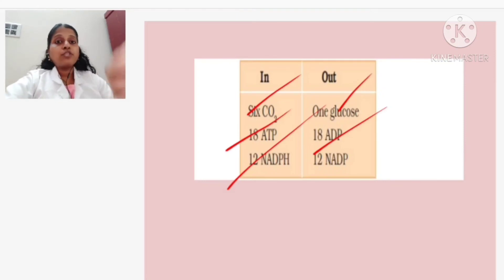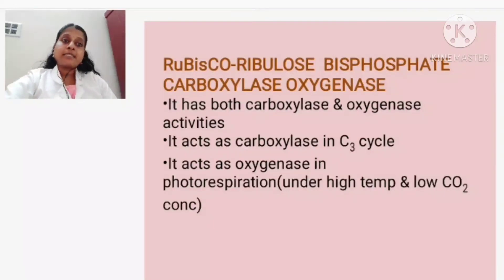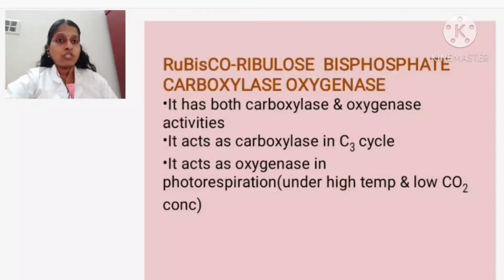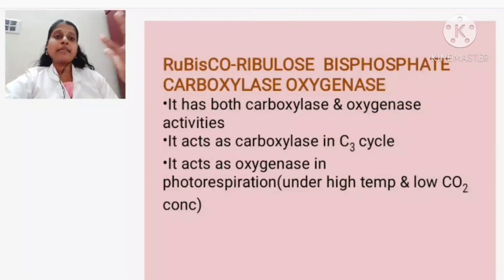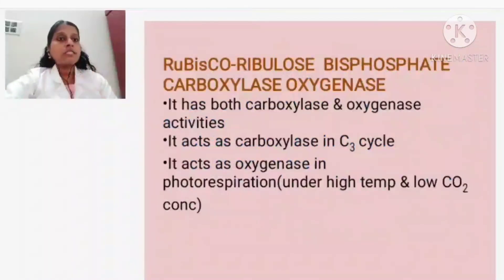Ribulose 1,5-bisphosphate (RuBP) - also known as RUBISCO - when there is more carbon dioxide in the surrounding, acts as a carboxylase and fixes carbon dioxide. When there is more oxygen in the surrounding, it acts as an oxygenase and fixes oxygen. With this, we have come to the end of the C3 cycle.